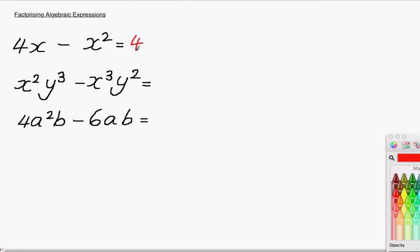4x can simply be written as 4 times x. All the dot here means is multiply. Subtract x squared, simply put, is x times by x.